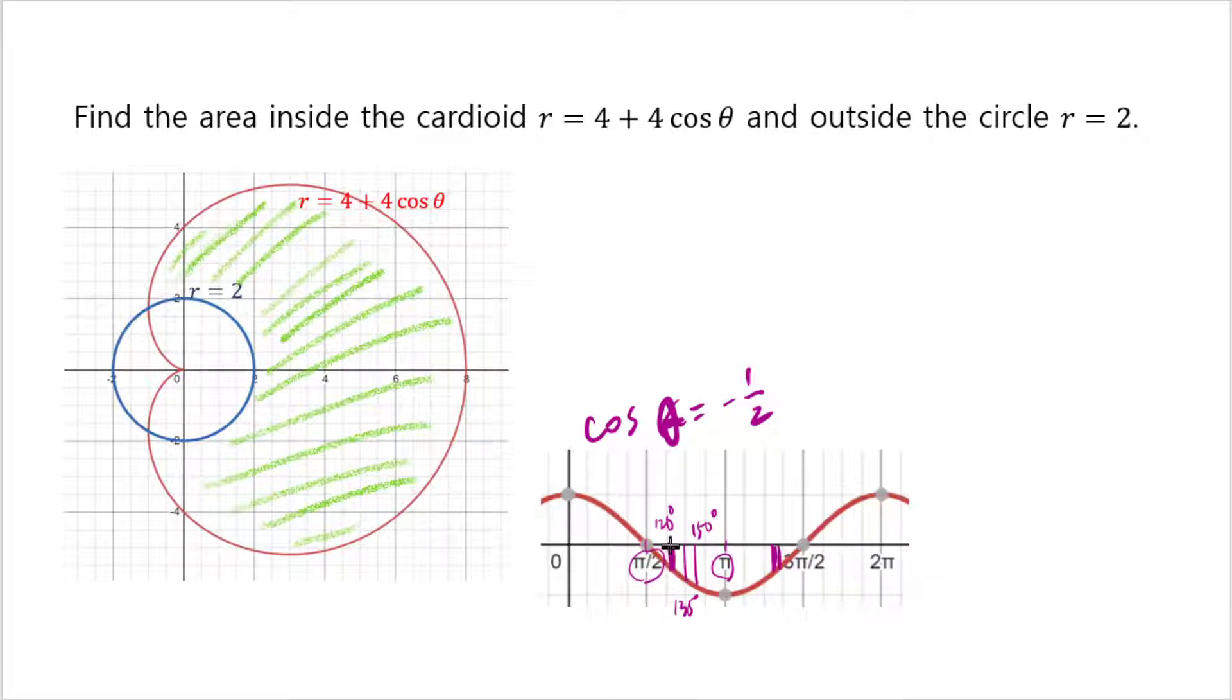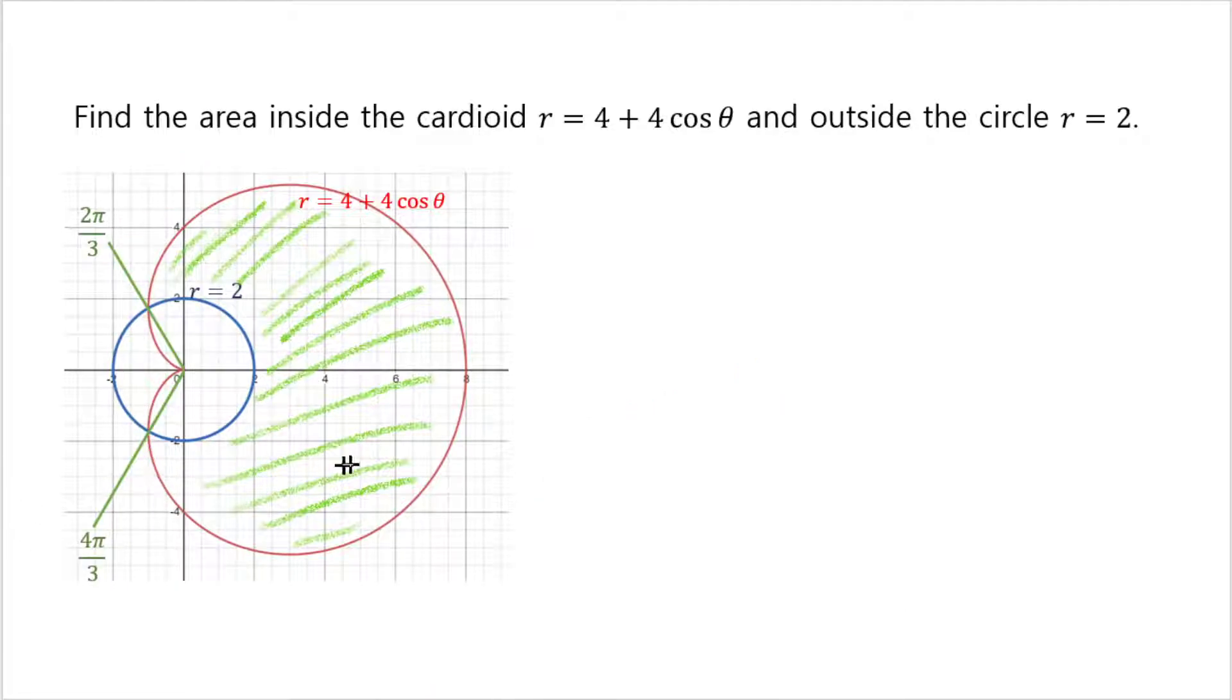Among them, this one is the smaller one, so we know that this angle must be 120 degrees, or in terms of radians, it's 2 pi over 3. Likewise, you can see that the next place where they meet is 4 pi over 3. Once you know that they meet at these angles, now it's our turn to figure out what the area integral should be.